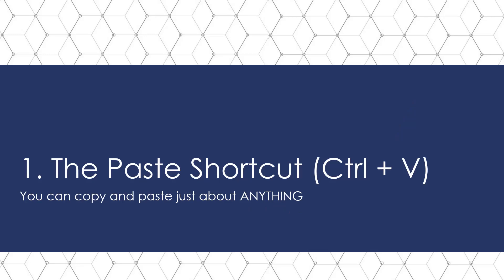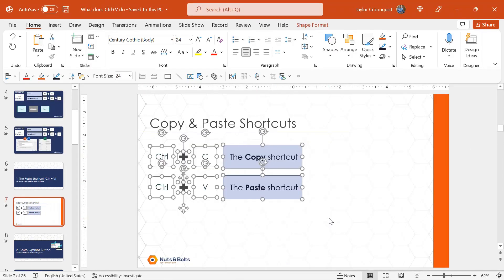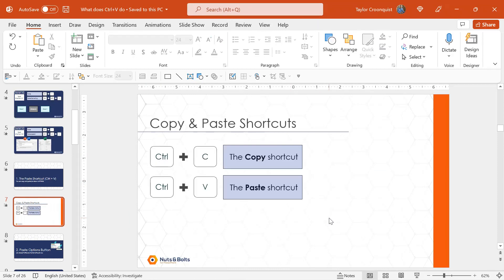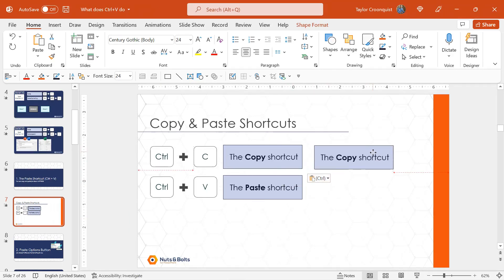Let's first talk about the paste shortcut, Control V to paste. We can copy and paste just about anything on your computer. Here in PowerPoint, I have the classic Control C to copy and Control V to paste shortcuts on screen. Before we paste an object, we need to first select something — Control C to copy, Control V to paste. If you have a sharp eye, there's that paste options button, which we'll talk about in the next section.